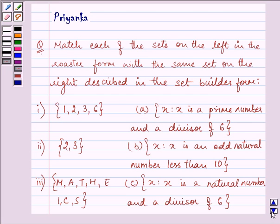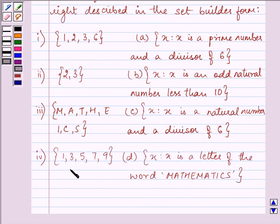Now, these are the sets which are given to us. We need to match them correctly - roaster form to the same set which is described in set builder form. Let us first look at the numbers: 1, 2, 3, 6; 2, 3; M-A-T-H-E-I-C-S; 1, 3, 5, 7, 9. And on the right hand side: X is to X is a prime number and a divisor of 6; X is to X is an odd natural number less than 10; X is to X is a natural number and a divisor of 6; X is to X is a letter of word mathematics.